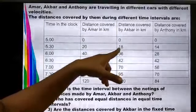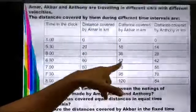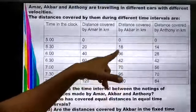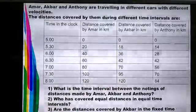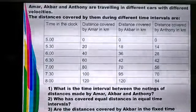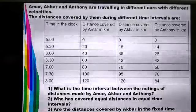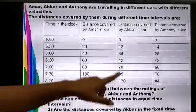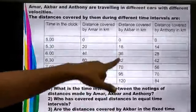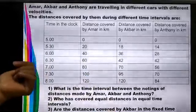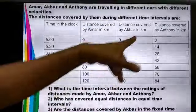For Akbar, at 5 o'clock the distance is 0 km, then 18 km after half an hour, then 36 km, then 42 km. The differences are 18, 18, and 12 — unequal distances in equal intervals of time — so Akbar is moving with non-uniform speed.